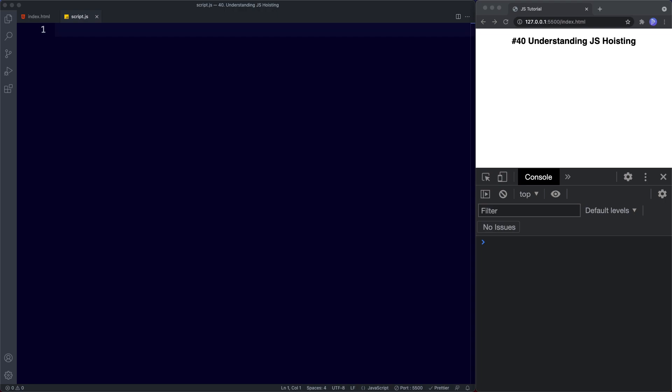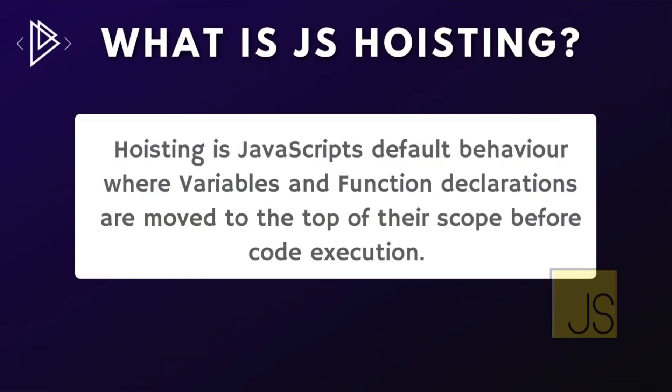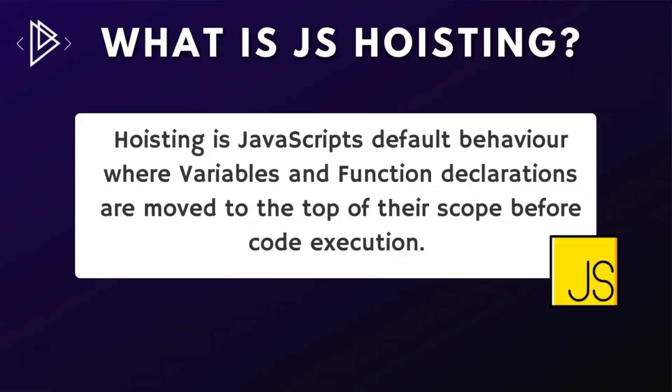So before we dive into some code let's understand first what hoisting actually is. Hoisting is JavaScript's default behavior where variables and function declarations are moved to the top of their scope before code execution. This means that we can call functions before we write them in our code.